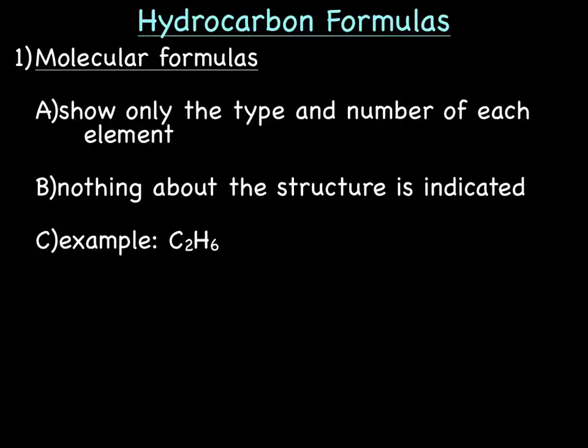Hydrocarbon formulas. There are three different types of formulas for hydrocarbons. First one is molecular formulas. A molecular formula is the type of formulas we've been talking about all along. They show both the type and number of each element in the molecule, and nothing is indicated about the actual structure, so how the molecules are bonded together. It's just the type and number of atoms in the molecule.